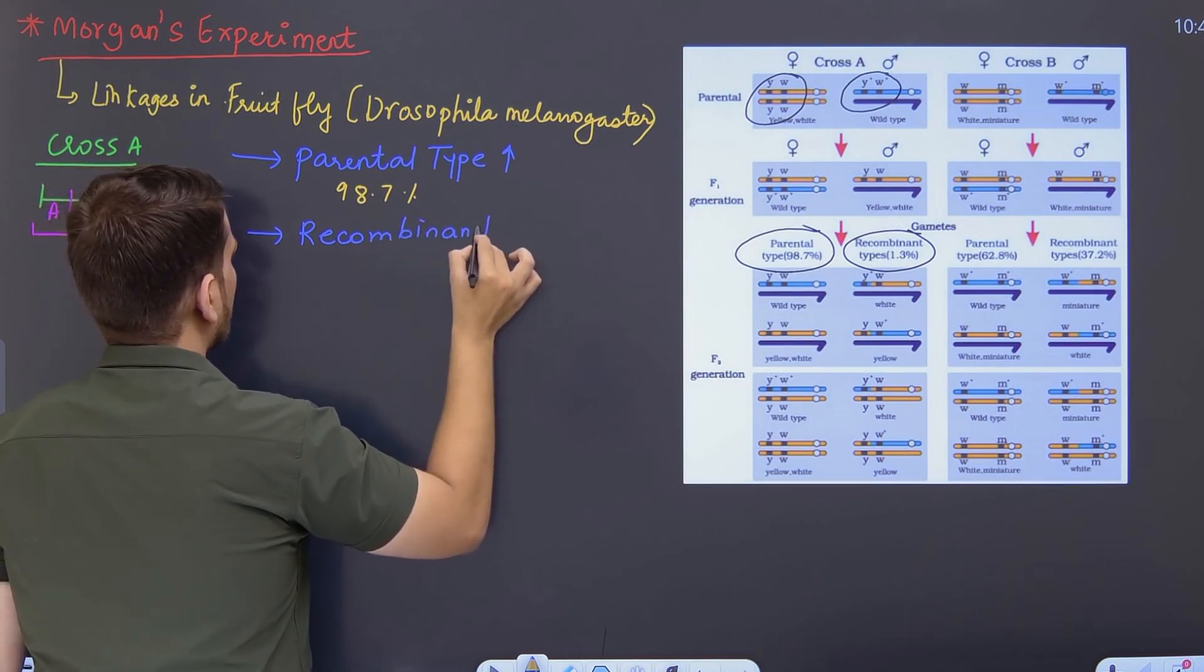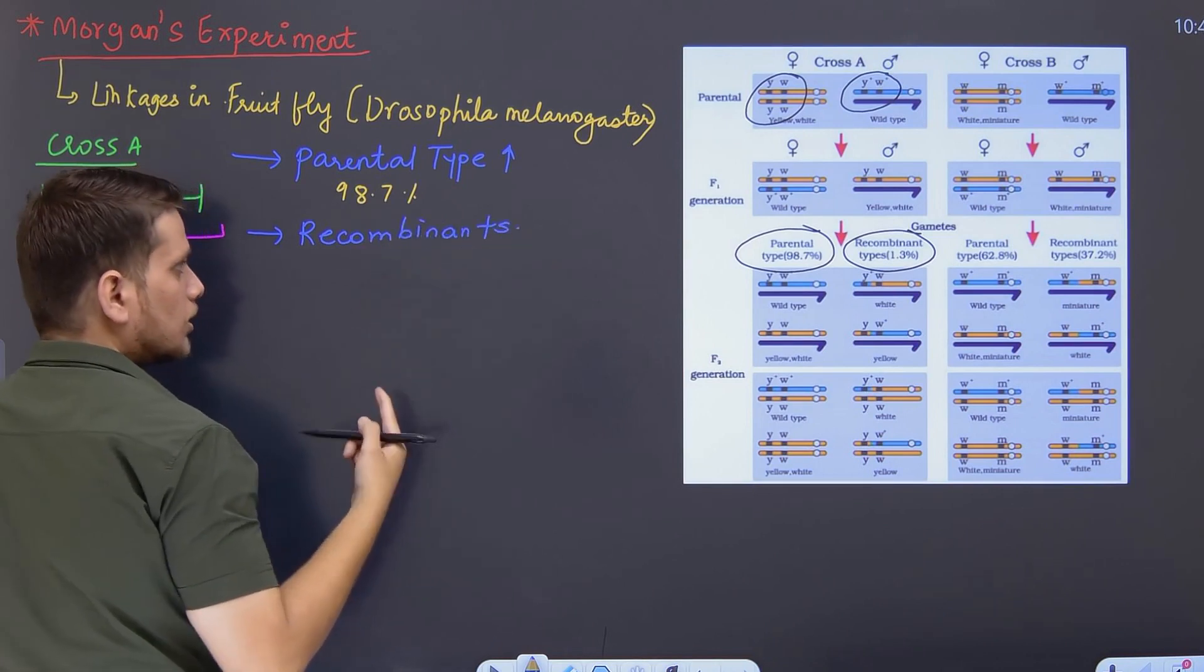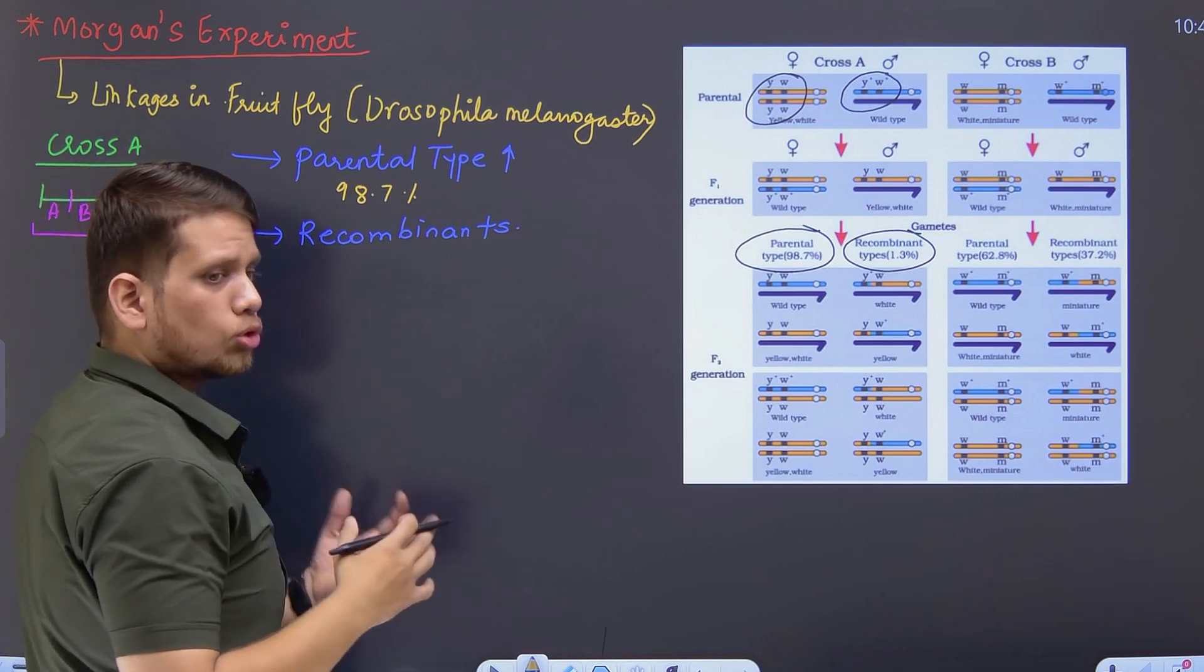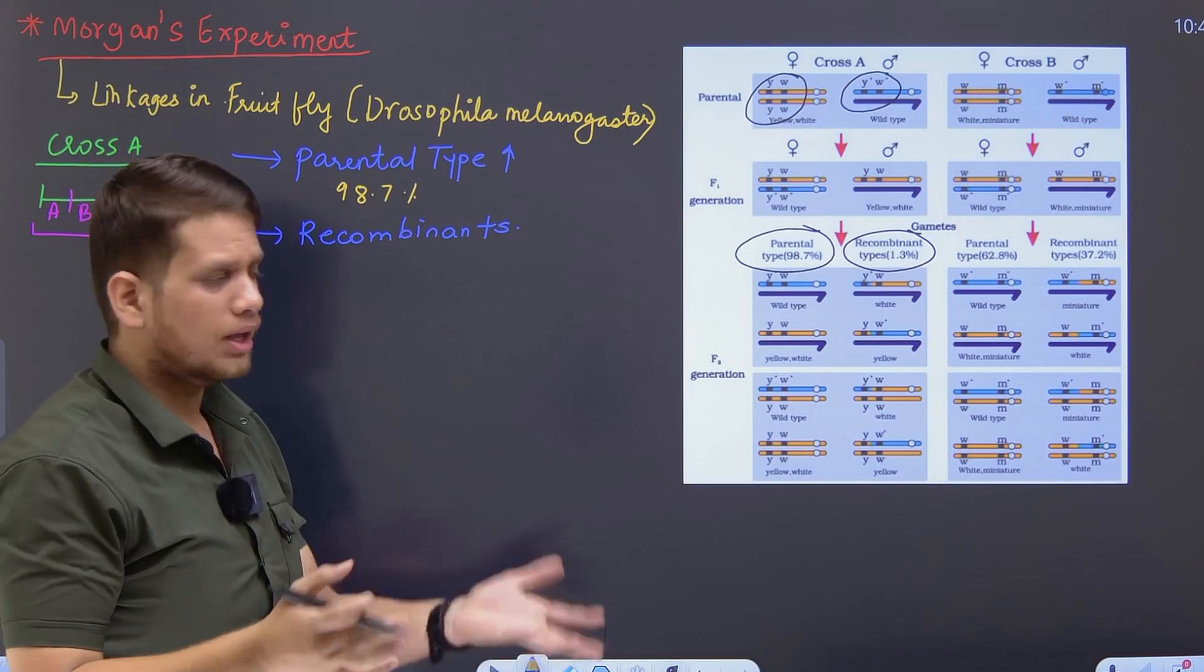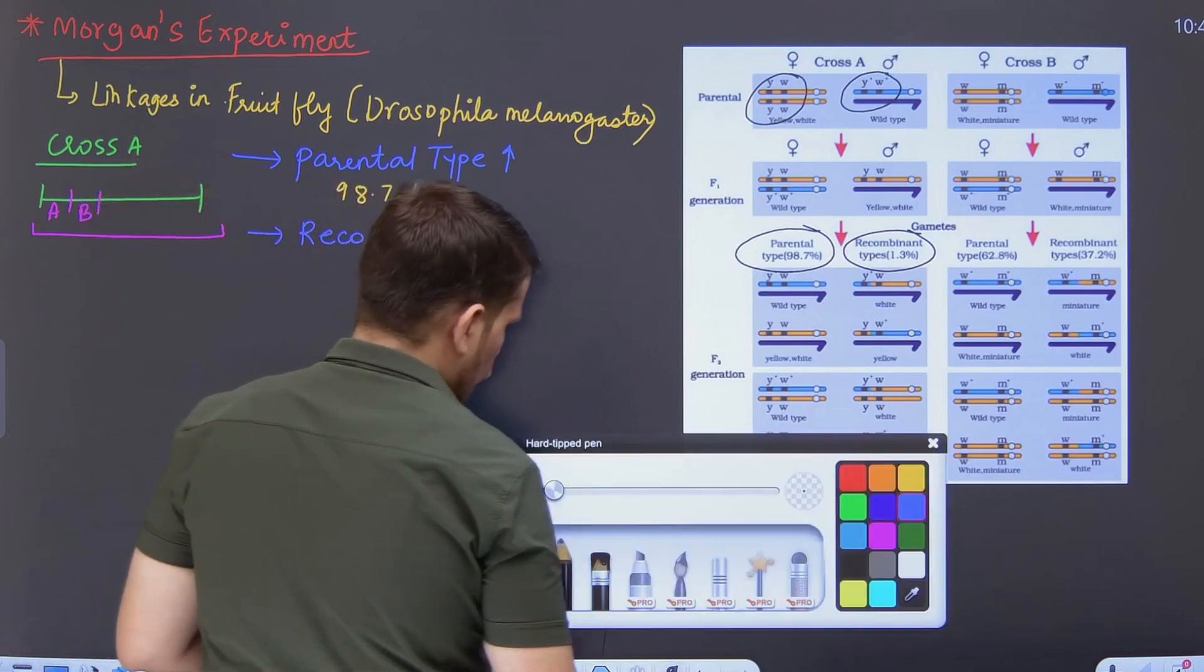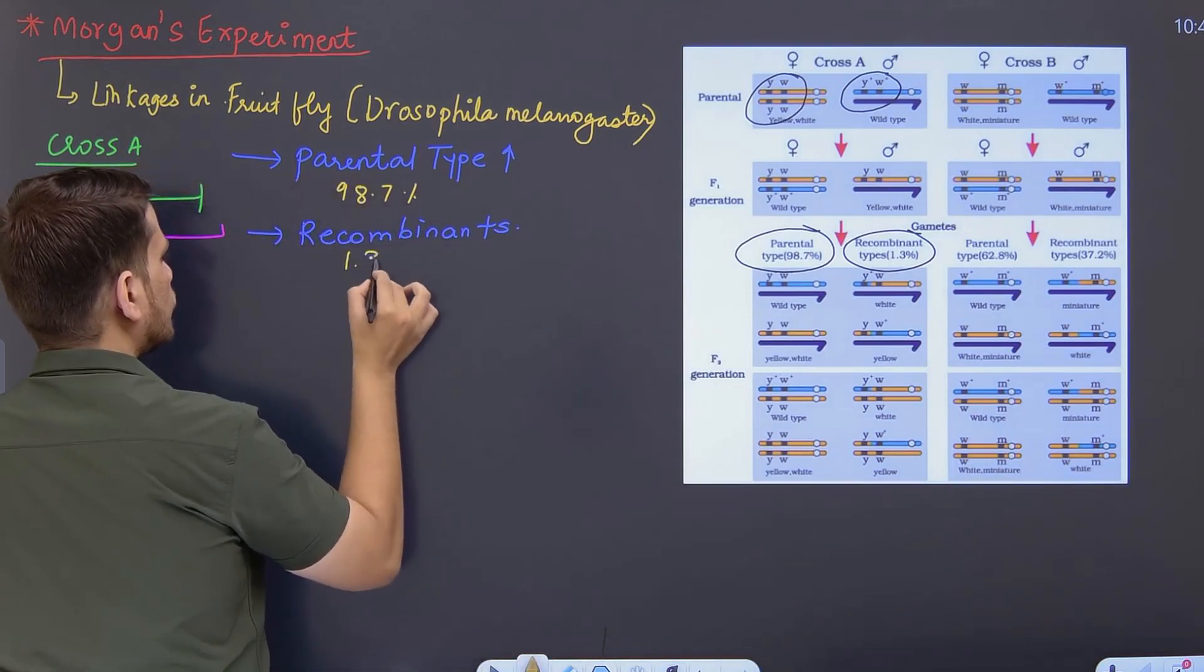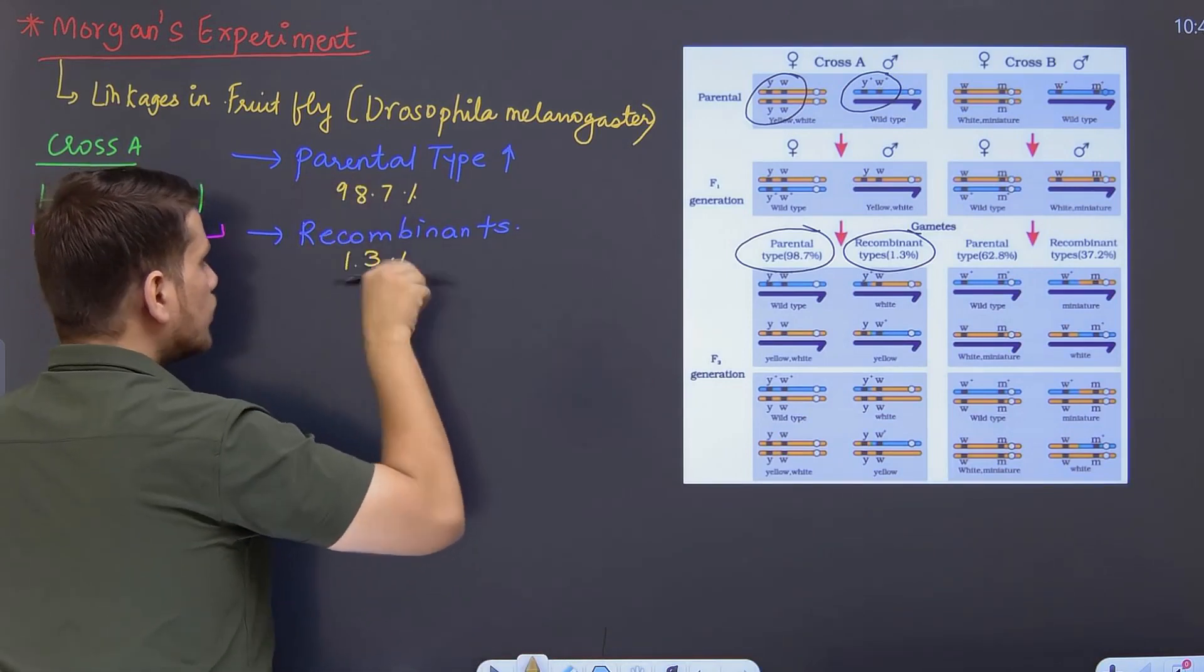When genes are very close together, the percentage of crossing over is less. If percentage of crossing over is less, then the progeny which are crossover, meaning new variations, will be very less. So approximately in cross one, it was found to be 1.3%.